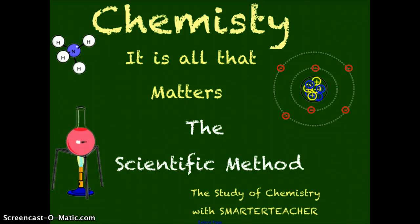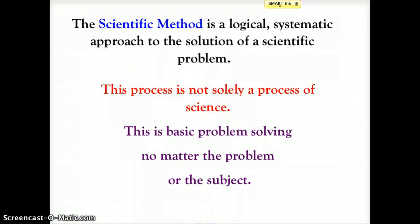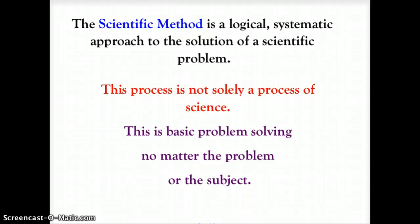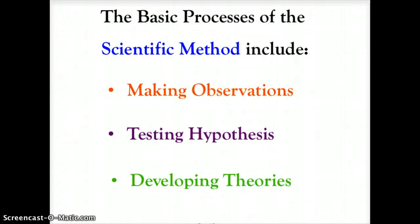In our continued study of chemistry, we're going to look at the scientific method. The scientific method is a logical, systematic approach to the solution of a scientific problem. This process is not solely for science — any problem can be approached this way, whether it's math, history, or art. Basically, the scientific method breaks down into three components: making observations, testing hypotheses, and developing theories.